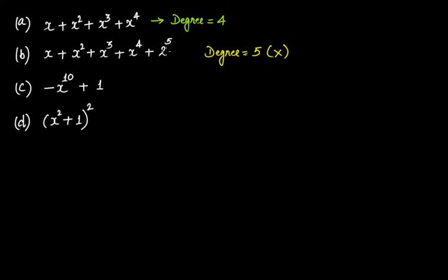In fact, 2 raised to the power of 5 is nothing but 32, which is a constant. So look for the power of variable x with the highest exponent — it is x raised to the power of 4. Therefore the degree is not 5 but 4.